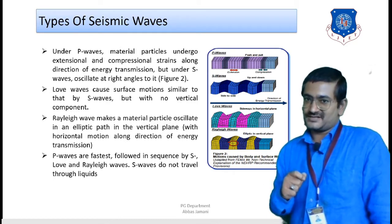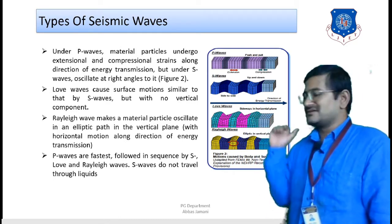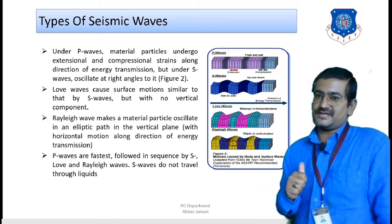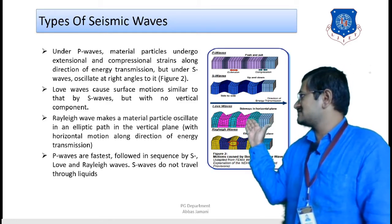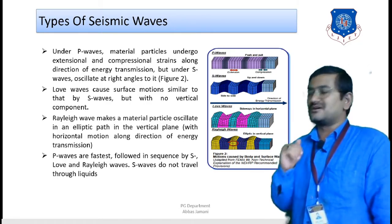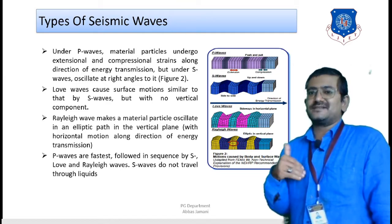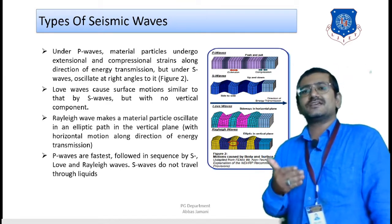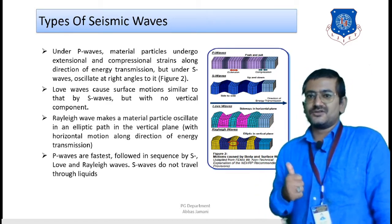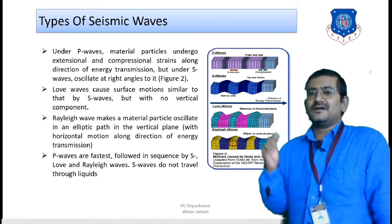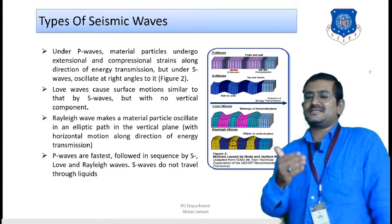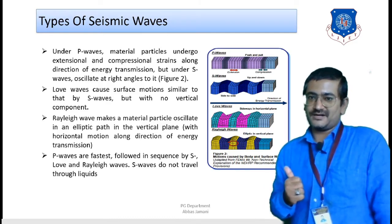In contrast, S waves have a motion that is zigzag in nature. This is because S waves have two components: a vertical component and a horizontal component. The second key difference from P waves is that in S waves the motion of the particle is perpendicular to the direction of energy transfer. Due to this combined vertical and horizontal motion, S waves behave quite differently from P waves.